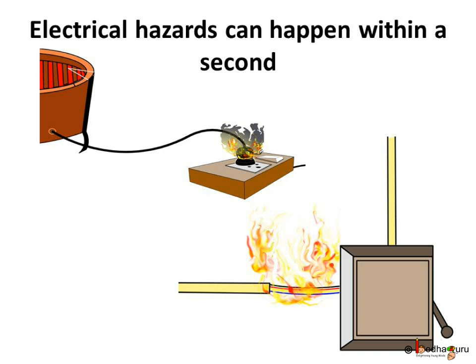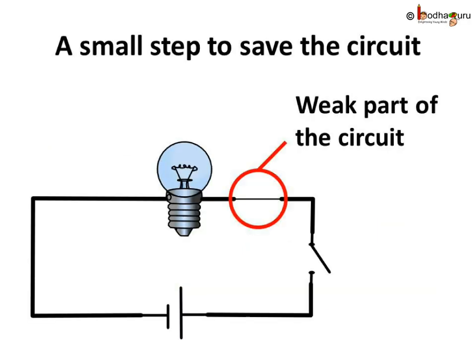This is because overloading or short circuit can happen in a split second, and thus we won't get enough time to act. What if a small part of the circuit gets damaged automatically, just like the filament in the bulb, and breaks the circuit? This way, the flow of excessive current shall be automatically stopped as the circuit would be broken, and thus damage to the circuit and its elements can be prevented.